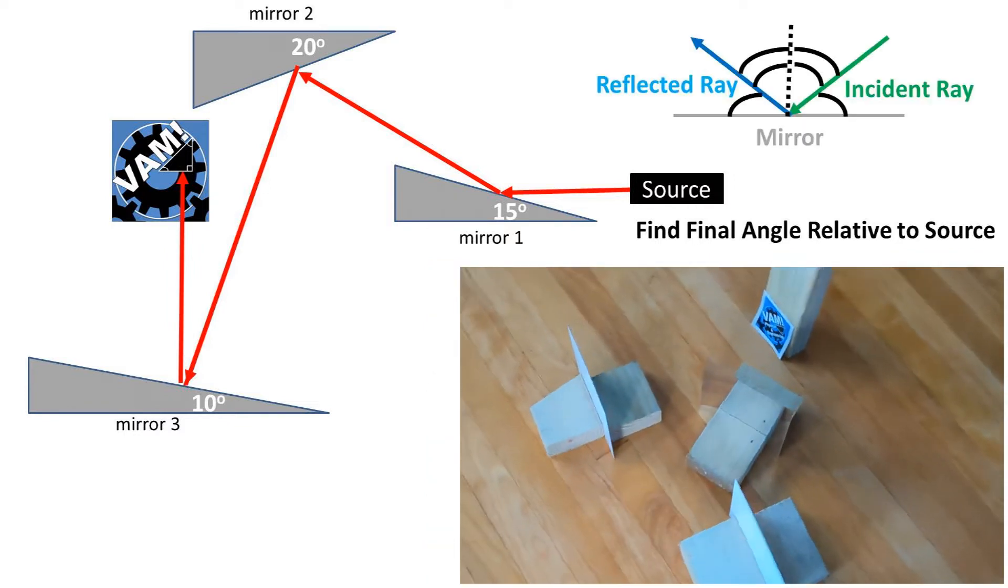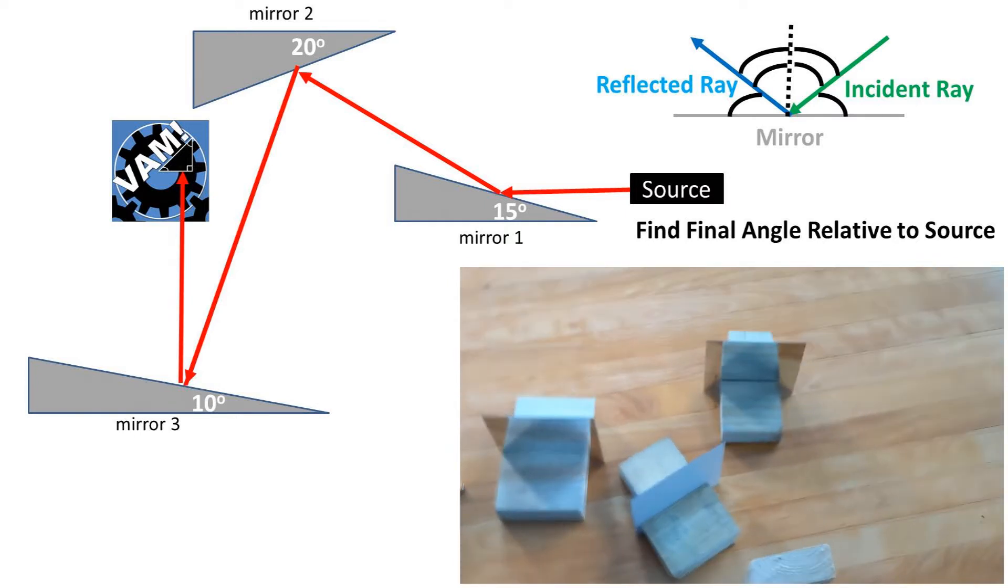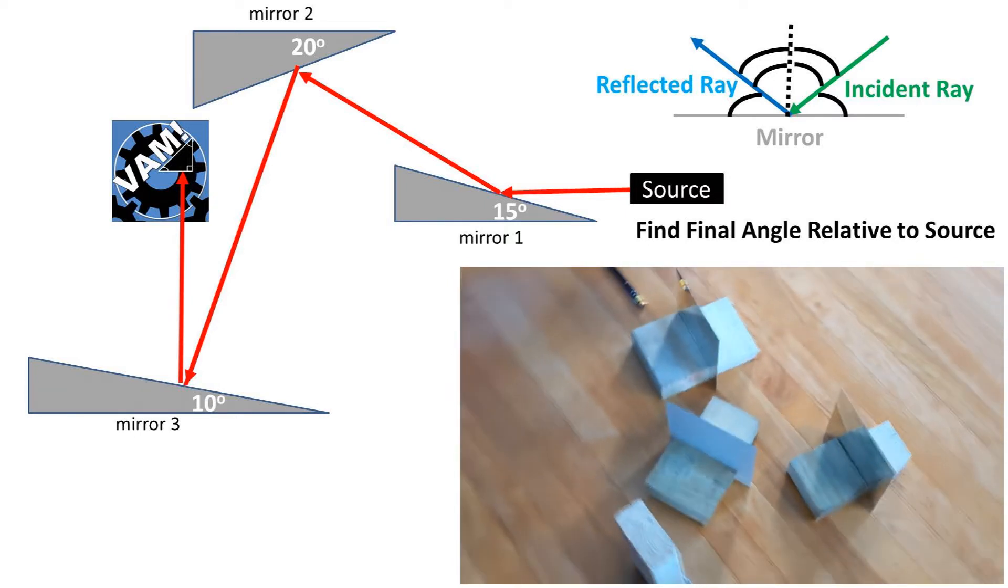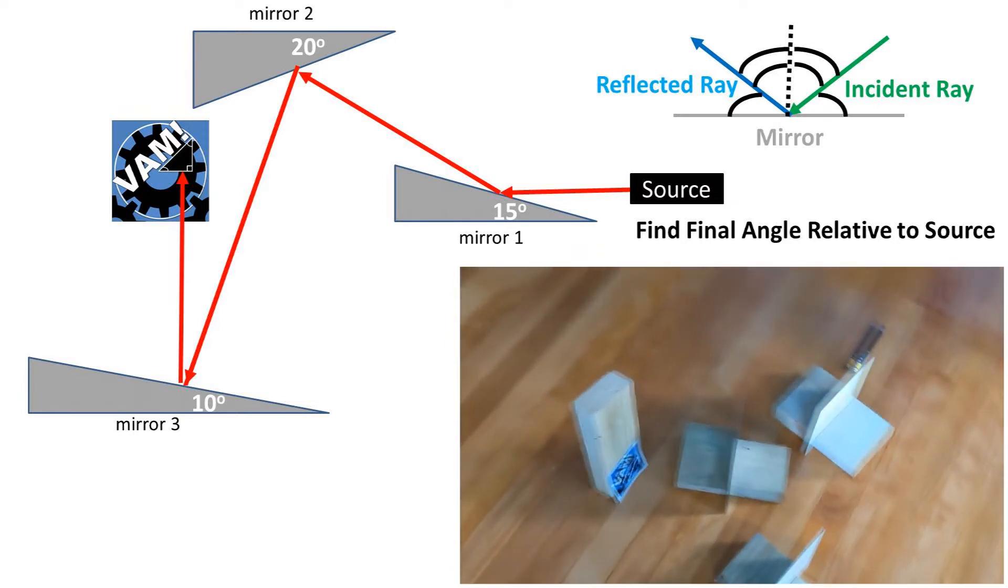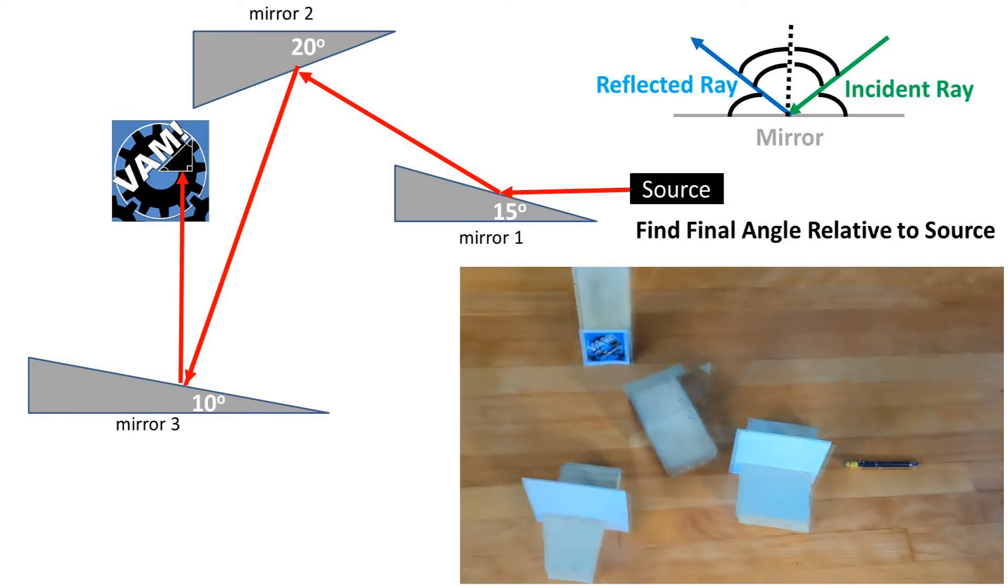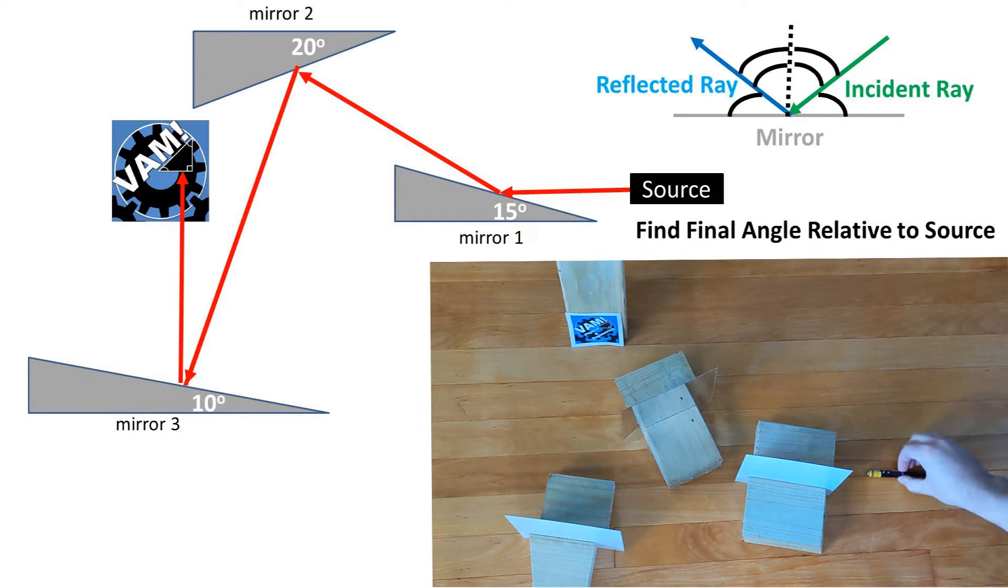To begin, if the mirrors were to be flat, the angle of the incident ray, or ray from the source, is the same as the reflected ray, or ray bouncing off the mirror, both from the mirror's surface and the line normal to the mirror as depicted.